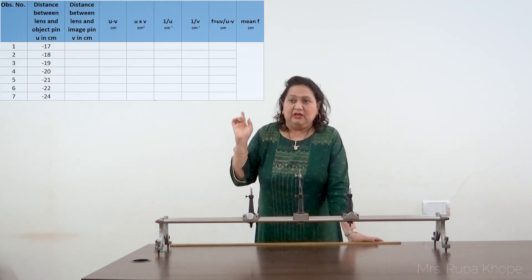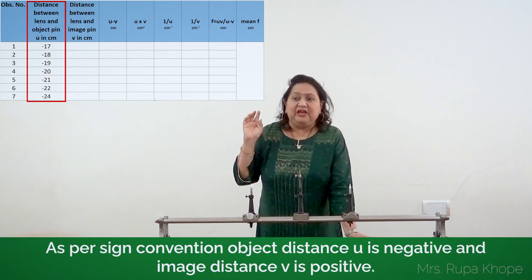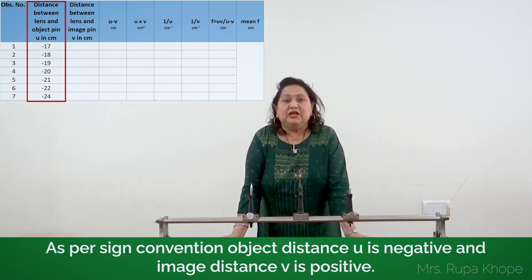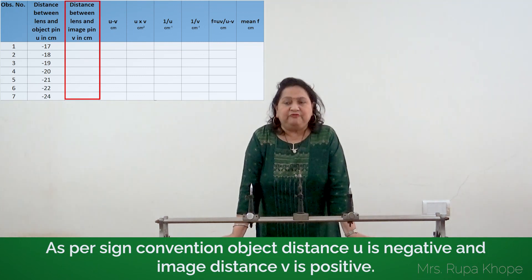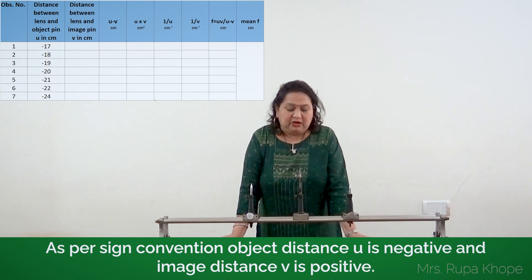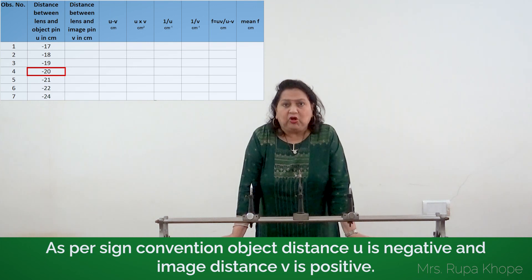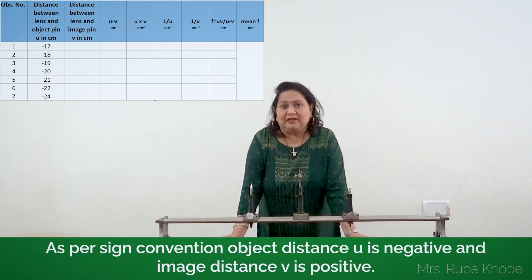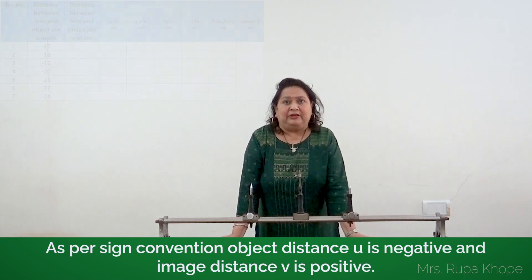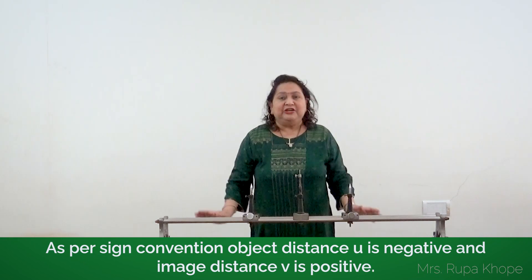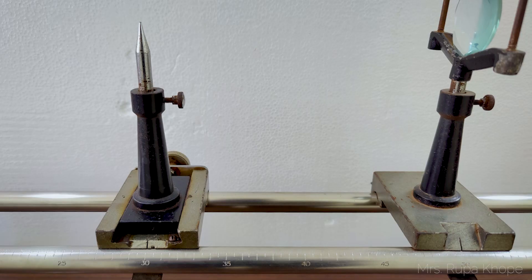Look at the observation table. In the first column we have u, that is the object distance. The second column we have v, that is the image distance. We have got the rough focal length in the range of 10 cm, but it is a rough focal length — it is not perfect. We need to go for perfection, and for that we need to perform the experiment.